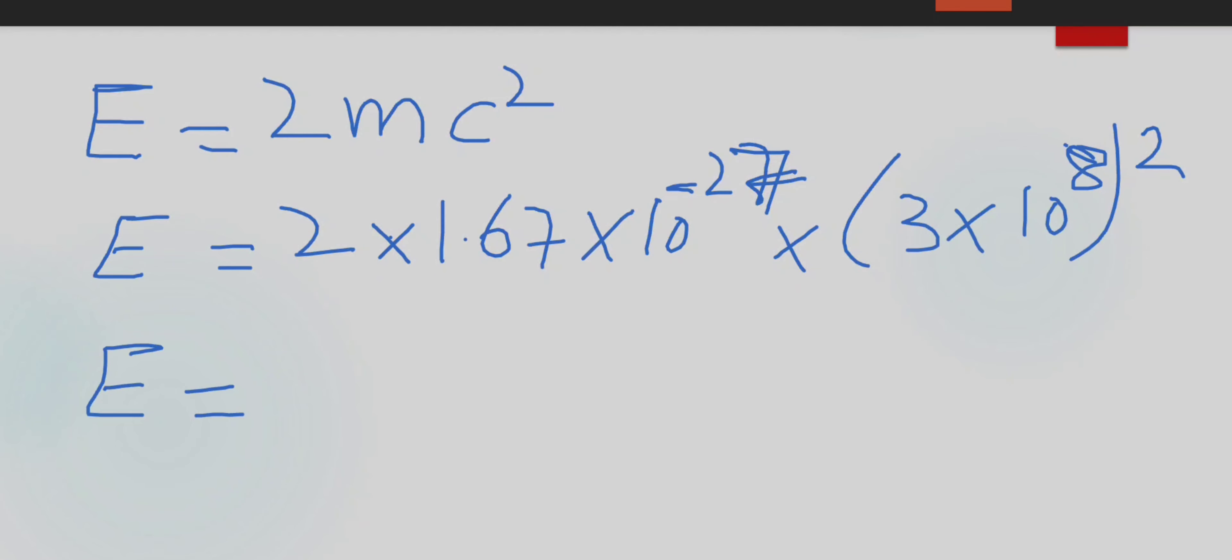E will be equal to 2 × 1.67 × 10⁻²⁷, and the square of 3 × 10⁸ will be 9 × 10¹⁶. After simplifying this, we get the answer as 3 × 10⁻¹⁰ J.